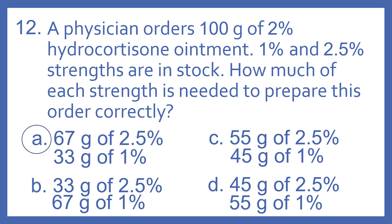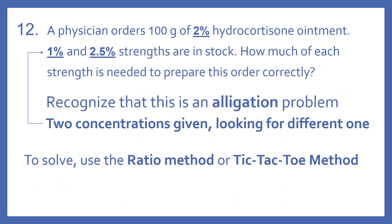The answer is A: 67 grams of 2.5% and 33 grams of 1%. The way to work this problem — first, recognize that it's an alligation problem. We have two concentrations given, and we're looking for a different one that's in between the two concentrations we have.